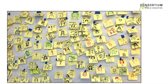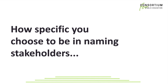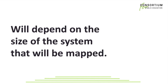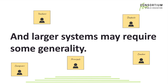This is an example of avatars drawn by high school students. If you were mapping a school system, stakeholder titles might include principal, history teacher, ninth grader, etc. How specific you choose to be in naming stakeholders will depend on the size of the system being mapped. Smaller systems may allow for more specificity, and larger systems may require some generality.